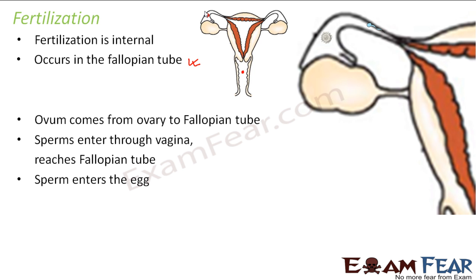The sperms are motile, so they are capable of moving. The sperm enters the egg — here you can see the sperm entering the egg. The moment the sperm enters the egg, the fusion of the nucleus of the sperm and the ovum takes place. The sperm contains a nucleus, and the ovum also contains a nucleus, so as soon as the sperm enters the ovum, both nuclei fuse together.